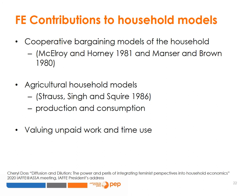Feminist economists like McElroy and Horney 1981, and Manser and Brown 1980, introduced cooperative bargaining models of the household. At the same time, agricultural household models like that of Strauss, Singh and Squire 1986, modelled households as both the location of production and consumption and questioned the separability of the two functions.